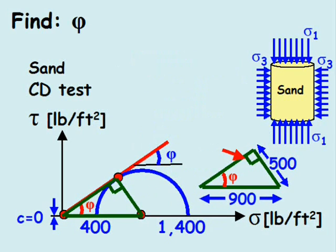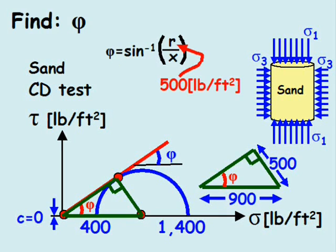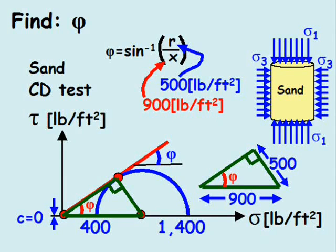Keep in mind that this is a right triangle. The friction angle is simply the arc sine of the opposite leg of the triangle divided by the hypotenuse of the triangle. Our values are added for the radius and the distance to the center, and we compute the same friction angle as before.